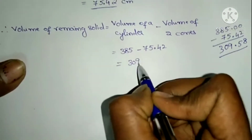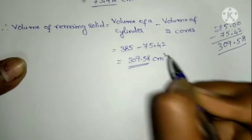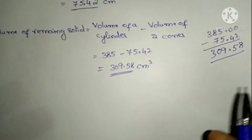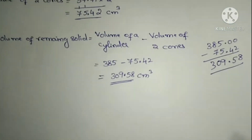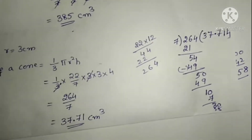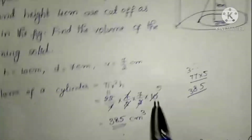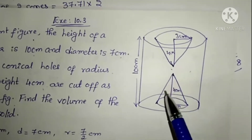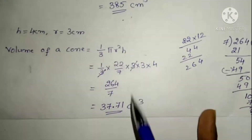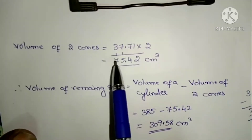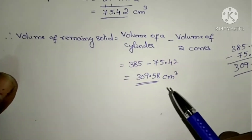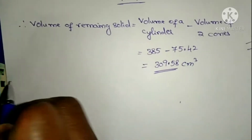The volume of the remaining solid is 309.58 cm³. If you get 309.57 or 309.58, there is no problem — the difference is due to rounding in the division. To summarize: cylinder volume minus volume of 2 cones gives the remaining solid volume equals 309.58 cm³.